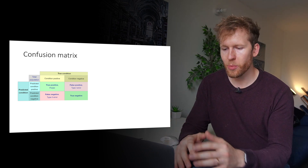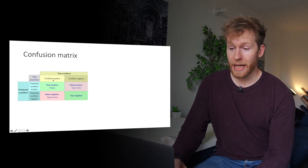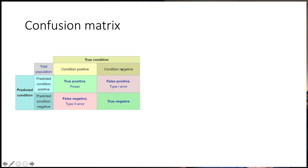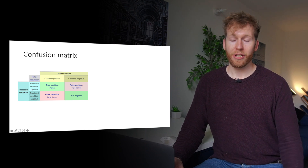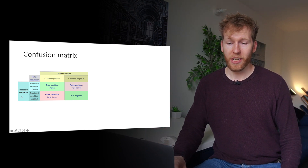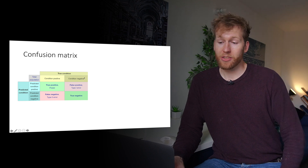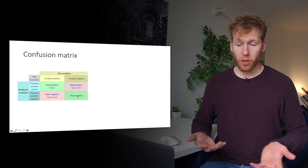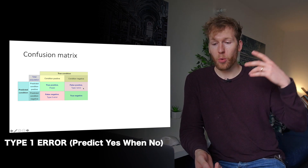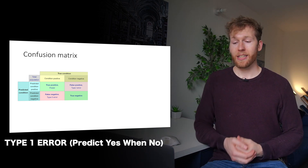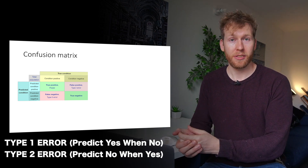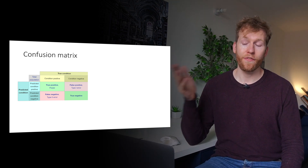To start with, we have the fundamental ways in which a classification model can work. At the top we have the true condition — positive or negative — and then the predicted condition. Using skin lesions as an example: condition positive means there's a cancerous skin lesion, negative means it's not cancerous. If our model predicts cancerous and it is cancerous, that's a true positive. If it predicts not cancerous and it's not cancerous, that's a true negative. Then there are two types of errors: a Type 1 error is where we say there is a cancer but there isn't, and a Type 2 error is where we say there's not a cancer when actually there is.